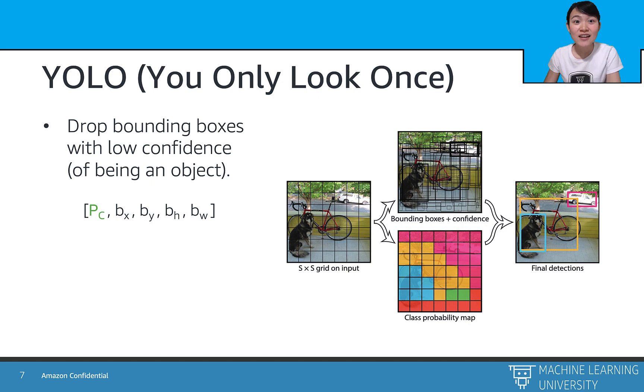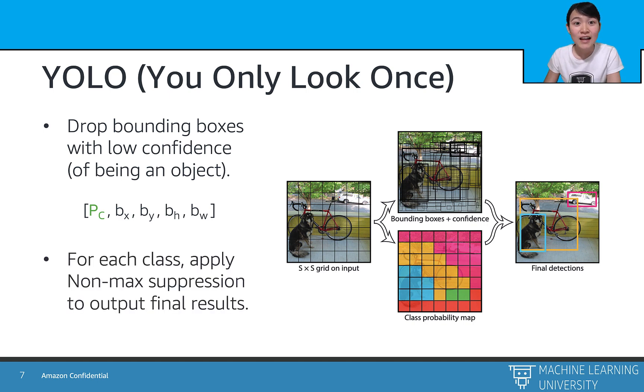And in the end, we need to eliminate the bounding boxes with low confidence probabilities of being an object, which is the pc in the 5 components of each bounding box. And then we apply the non-max suppression or NMS algorithm that we learned from the bounding box lecture and combine the boxes together.